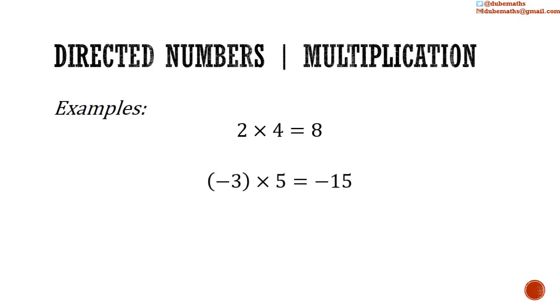Negative 3 multiplied by positive 5: 3 multiplied by 5 is equal to 15. A negative multiplied by a positive is a negative, so it's negative 15.